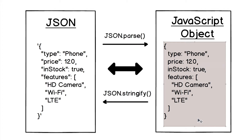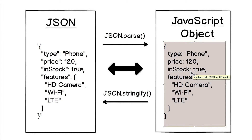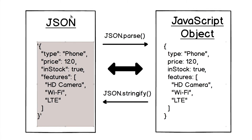A JavaScript object is not a string — it is an object, a JavaScript variable type. It is not required to use double quotes around each key; you can use them, but they are optional. JavaScript object is a variable type, while JSON is a string. In JSON, you must surround each key with double quotes.